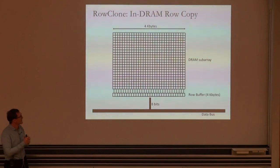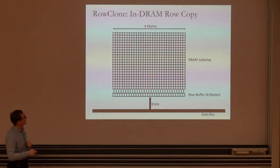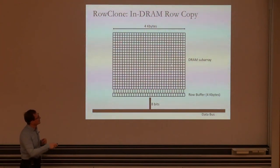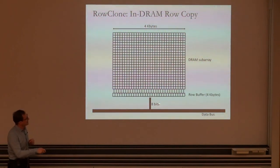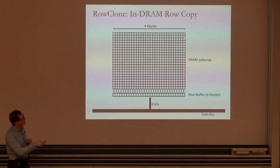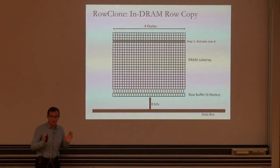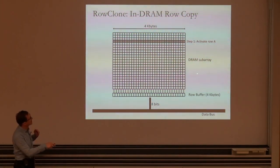The key idea: use the memory itself to copy one page to another page. The benefits are low latency — we're not going through the huge external interconnect and memory hierarchy but using the internal interconnect inside memory, which is much faster. Low bandwidth utilization — we're not using the memory bus at all if we don't move data out of the chip. No cache pollution, and no unwanted data movement. This paper proposes a mechanism reducing 4 KB page copy from 1,046 nanoseconds to 90 nanoseconds, and energy from 3.6 microjoules to 0.04 microjoules — one to two orders of magnitude reduction.